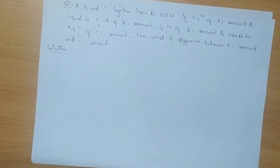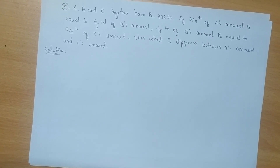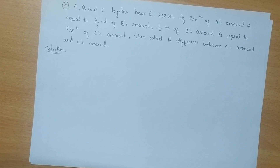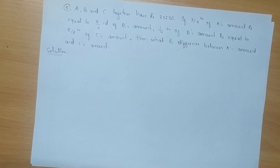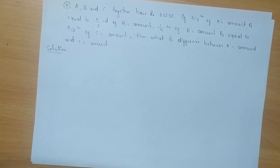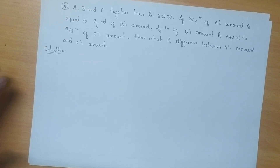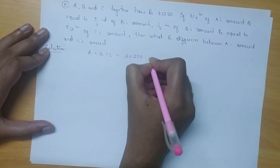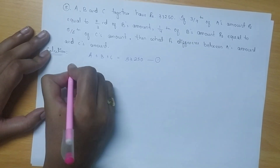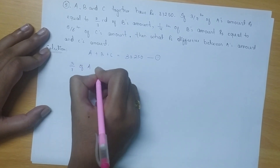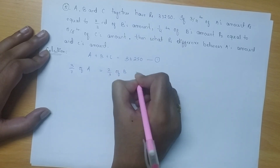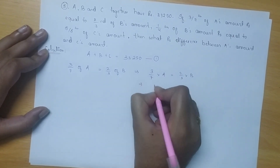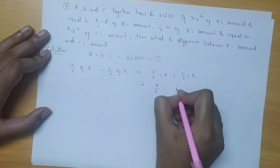A, B and C together have Rs. 33,250. If 3/7th of A's amount is equal to 2/3rd of B's amount, and 1/4th of B's amount is equal to 5/8th of C's amount, then what is the difference between A's amount and C's amount? Here we have to find out the ratio of A, B and C. It is given that 3/7 multiplied by A equals 2/3 multiplied by B, so A by B equals 14 is to 9.